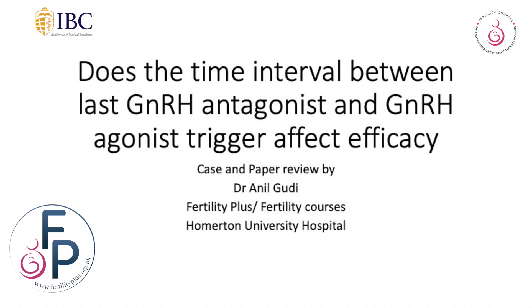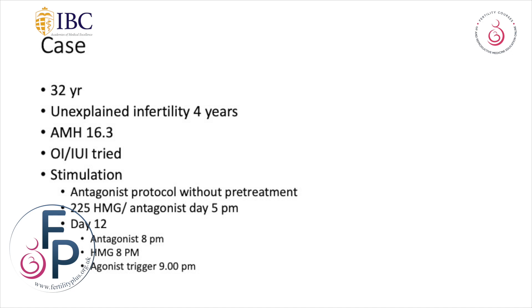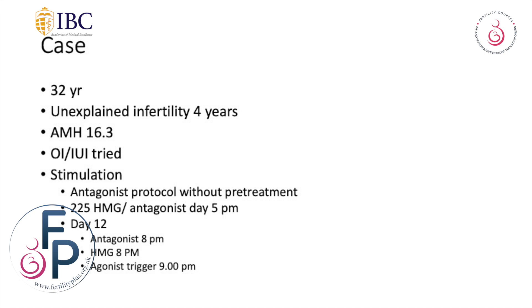Here's my case. A 32-year-old lady with unexplained infertility for four years, AMH of 16.3, ovulation induction tried, intrauterine insemination tried, and stimulation was on an antagonist protocol without any pretreatment — 2.25 of HMG and antagonist from day five in the evening. I moved to giving it in the evening rather than the morning. On day 12, we gave the antagonist at 8pm, HMG at 8pm, and the agonist trigger at 9pm.